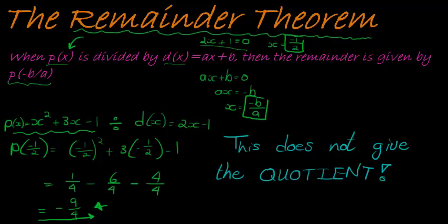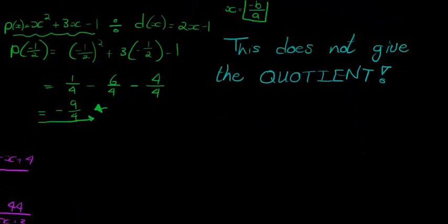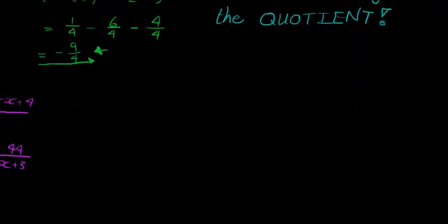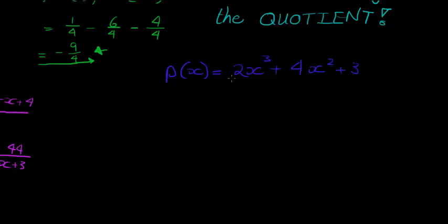Let me do one more example for you just to illustrate. In the previous video, we saw that if we take the polynomial, we did this with long division. 2x cubed plus 4x squared plus 3. If we did this and we took our divisor was equal to x minus 1. And then we found that our remainder was equal to 9. Let's see if that's true.